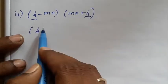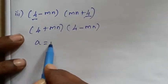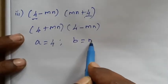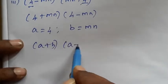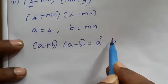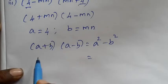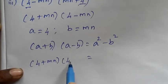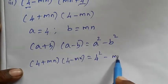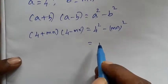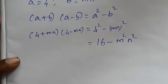Next example: 4 plus mn and 4 minus mn. Using A plus B, A minus B equals A squared minus B squared, A is 4 and B is mn. So the answer is 4 squared minus mn squared, which is 16 minus m squared n squared.